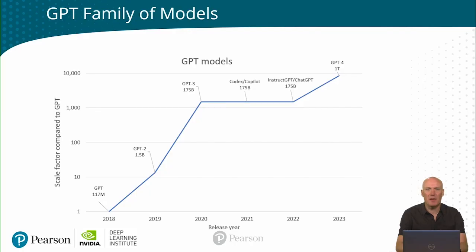We will now look at the evolution of the GPT models. The GPT family of models have been very influential. This slide shows the key models and we will go over some of the differences between them. Overall, they all use more or less the same architecture, but they are scaled up in size and they are trained in different ways. Today's models are 1,000 to 10,000 times larger than the original GPT model.